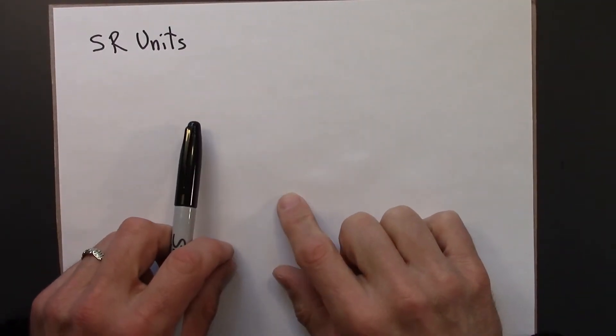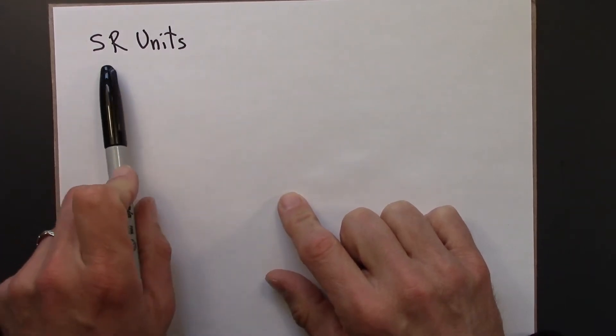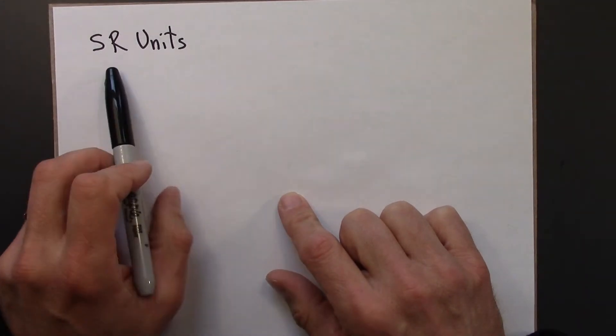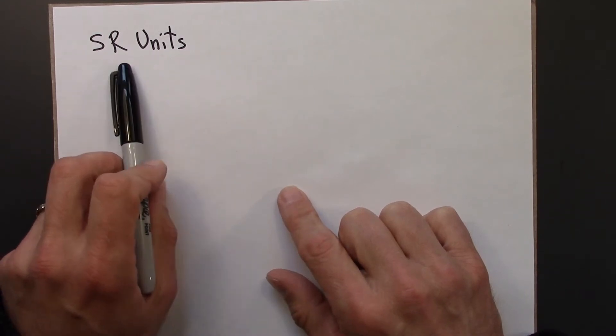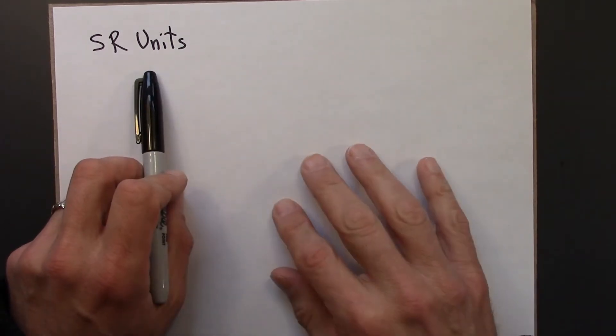The next thing I want to talk about is an approach to units in special relativity, sometimes called SR units, special relativity units. This is a little bit of a pun. The standard units for the metric system are often called SI units for system international, international system of units.